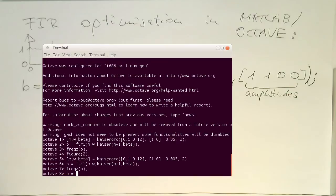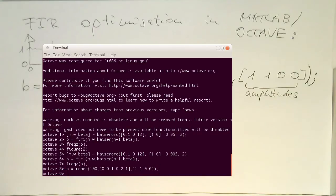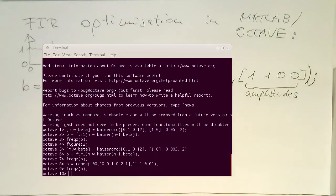Let's bring Octave back here and write B equals Remus, 100, and then 0, 0.1, 0.2, 1, 1, 1, 0, 0. And then we do our frequency response B and have a look.